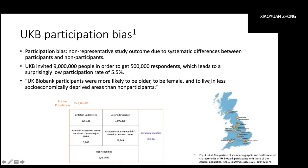First, some background introduction. What is participation bias? Participation bias is basically the non-representative study outcome due to systematic differences between participants and non-participants in the study. Specifically for UK Biobank, it invited 9 million people in order to get their 500,000 participants. Their participation rate is only 5.5%. About 6 million of them didn't actually respond to their invitations, and eventually their sample population is only 500,000.